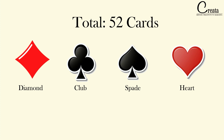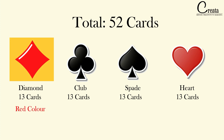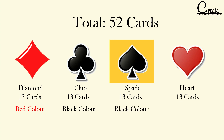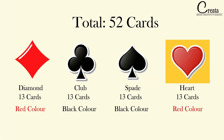That is diamond, club, spade, and heart. And all these cards are 13 in number. That is, diamonds are 13 cards, there are 13 club cards, there are 13 spade cards, and there are 13 heart cards. Further, the color of diamond is red, the color of club is black, the color of spade is black, and the color of heart is red.